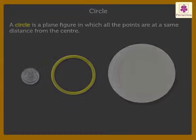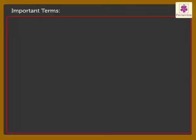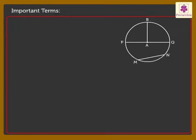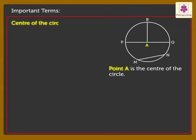Now, let's learn some of the important terms related to the circle. Look at the figure. Here, point A is the center of the circle. Center of the circle is the fixed point from which the circle is drawn.